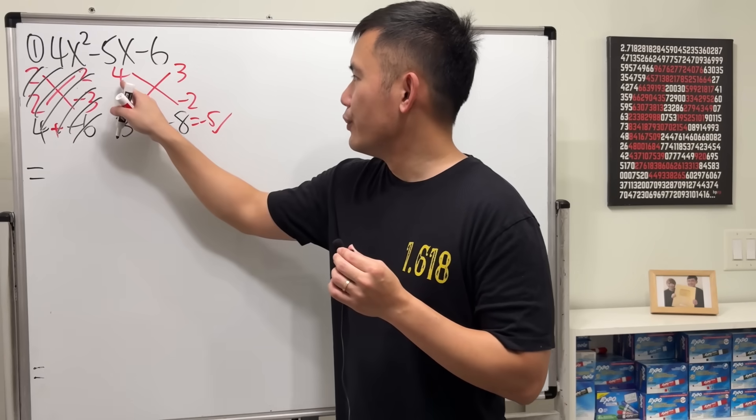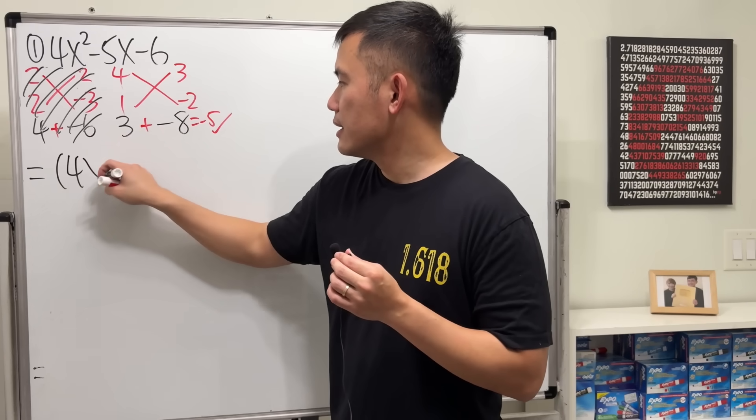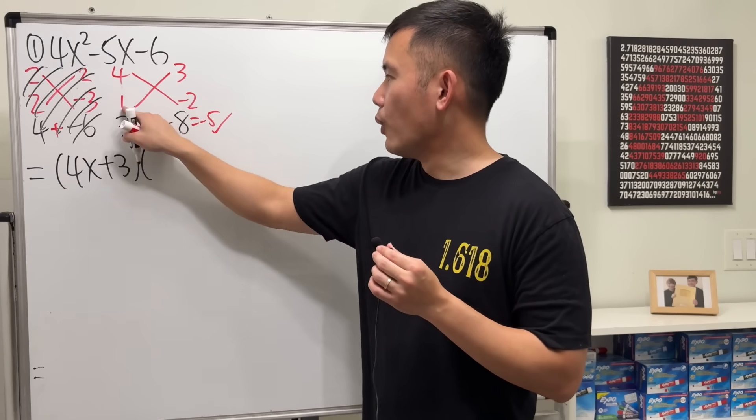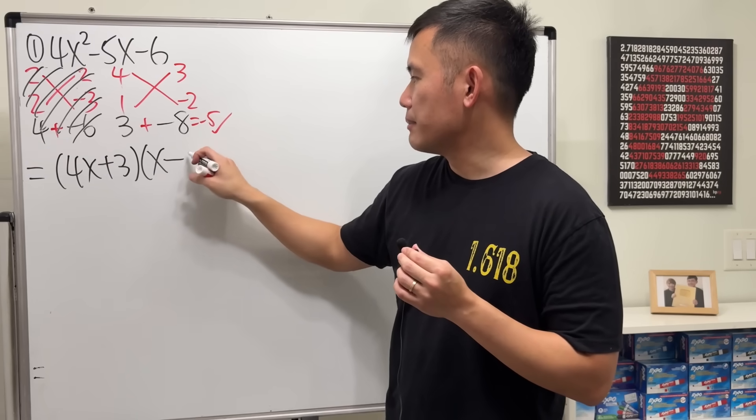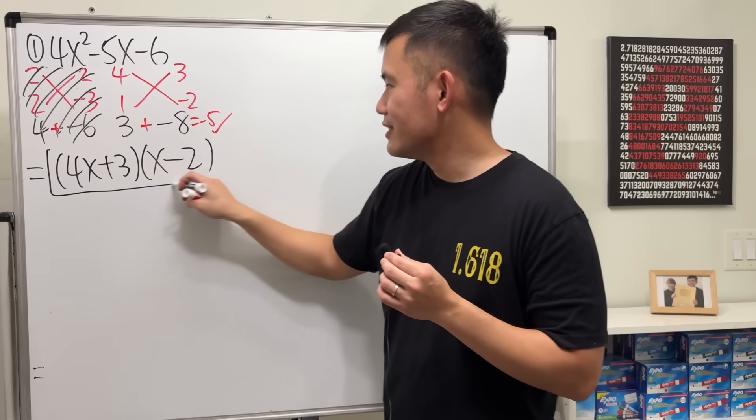And we have the answer. 4x plus 3 times 1x, which is just x, and then minus 2. And then we are done. Just like this.